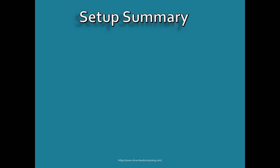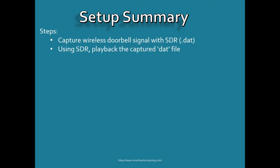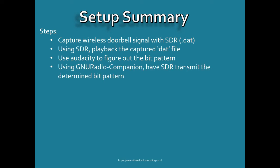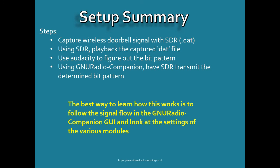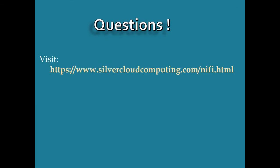In summary, what I've shown here is that you can capture a wireless signal, save it as a dat file, and use that dat file to play back the captured signal and ring the doorbell. Using Audacity you can do signals analysis to figure out the bit pattern, and once you have that bit pattern you can use GNU Radio Companion to have the SDR transmit that signal to ring the doorbell. The best way to learn this is to download the GNU Radio files I've uploaded, look at the processing blocks and modules, and play around with it. This approach works for any amplitude shift keying device. If you have questions, visit the website or email me at nifi at silvercloudcomputing.com.